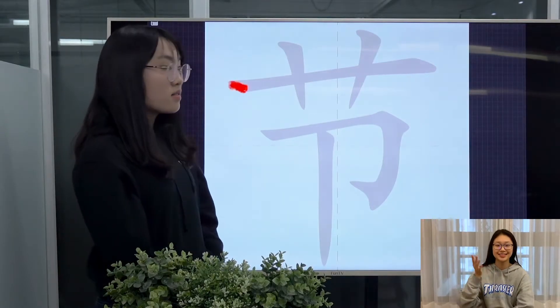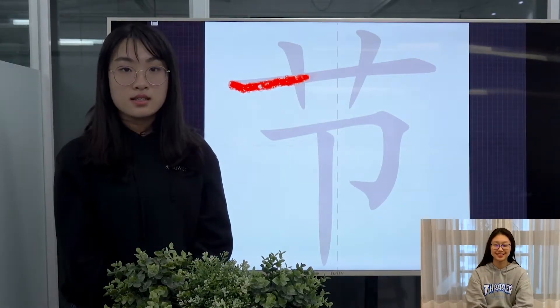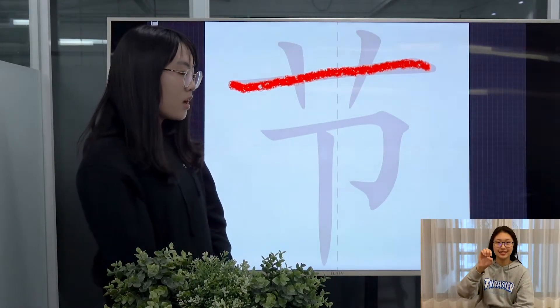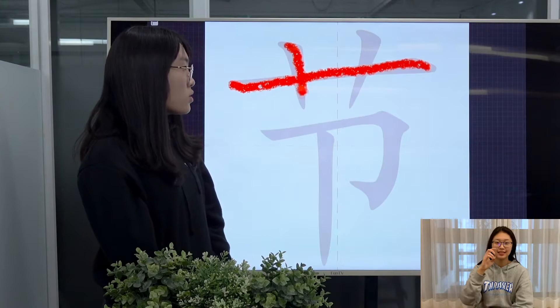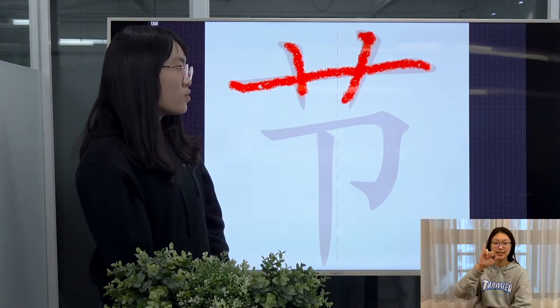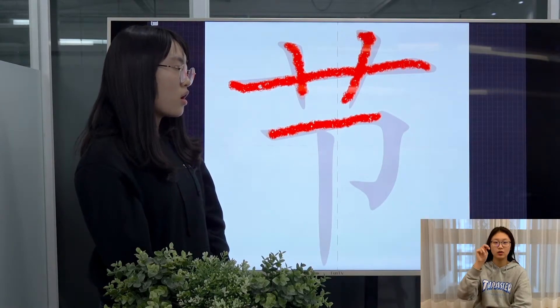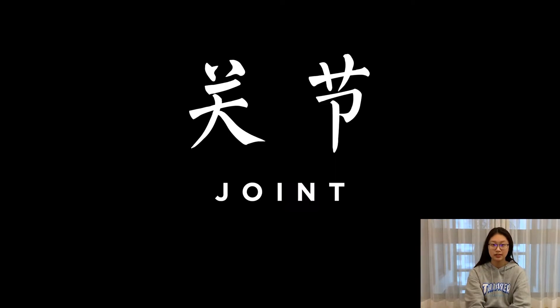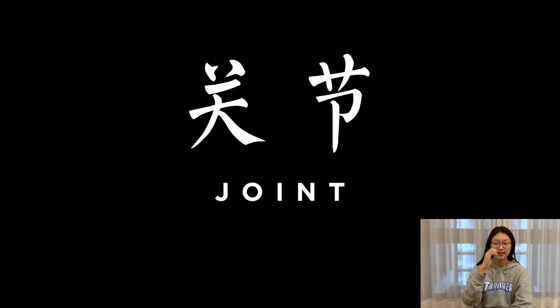This character is pronounced as 节. We use it to describe a node or knot. For instance, 关节 means your joint.